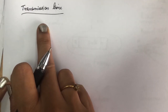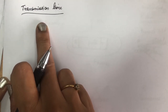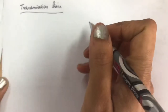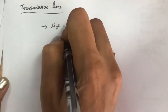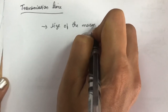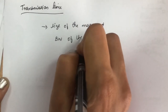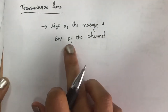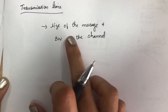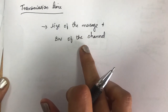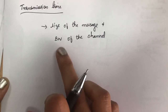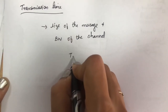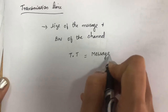Now we will look at the second component of latency: transmission time. Transmission time depends on the size of the message and the bandwidth of the channel. The formula is: transmission time = message size ÷ bandwidth.